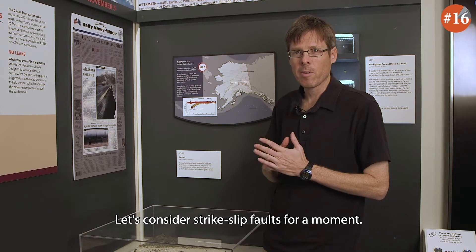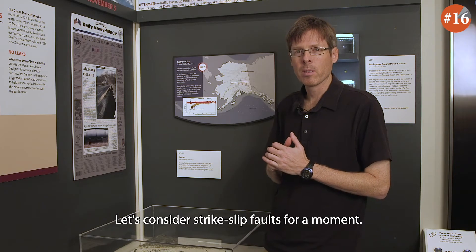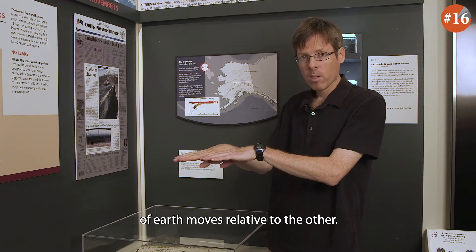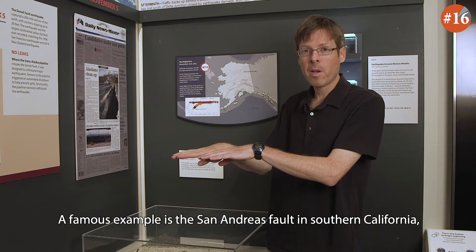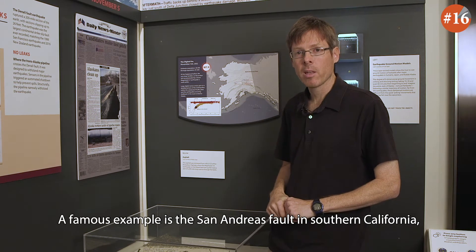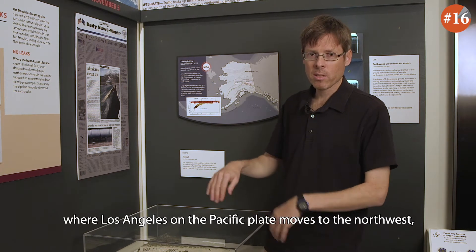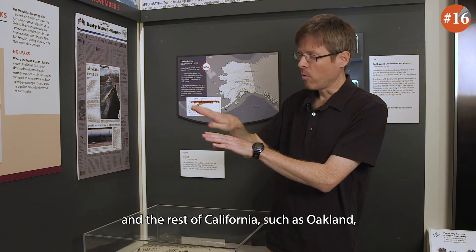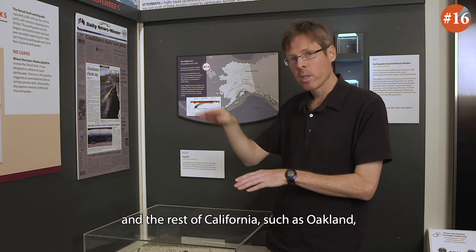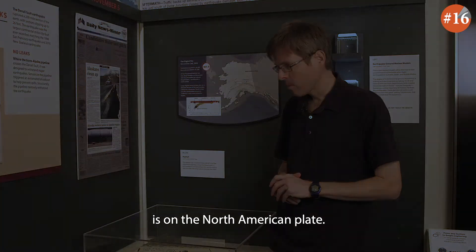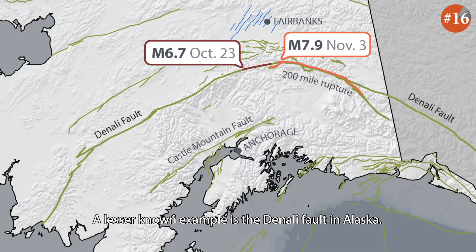Let's consider strike-slip faults for a moment. A strike-slip fault is where one block of earth moves relative to the other. A famous example is the San Andreas Fault in Southern California, where Los Angeles on the Pacific plate moves to the northwest and the rest of California, such as Oakland, is on the North American plate. A lesser known example is the Denali Fault in Alaska.